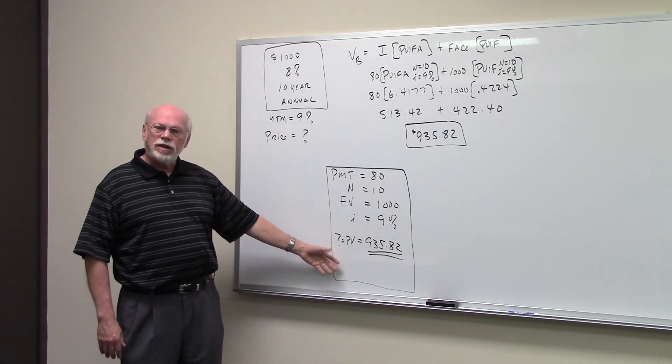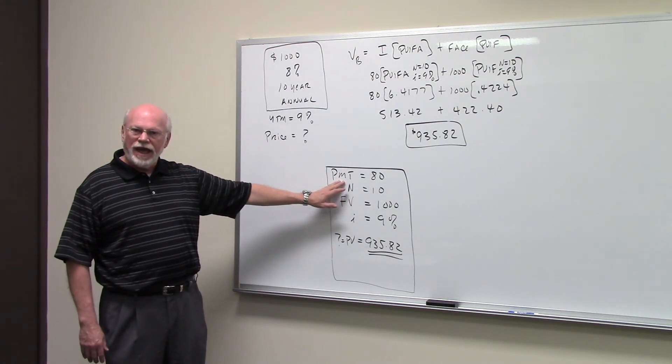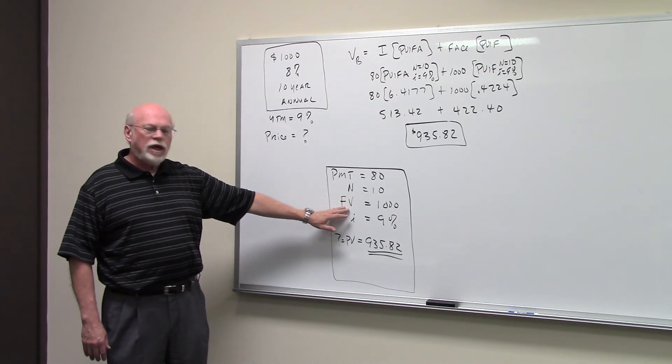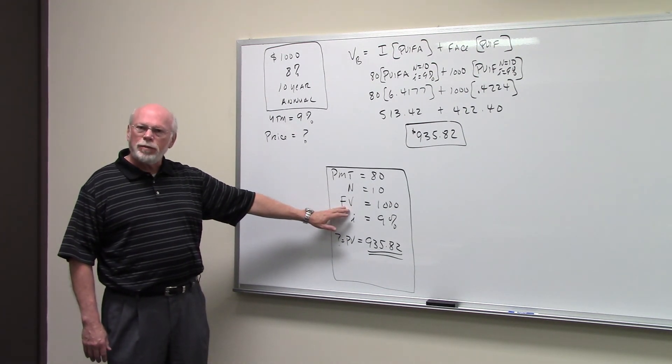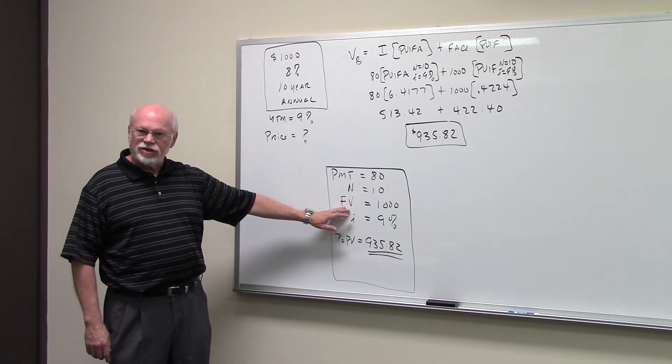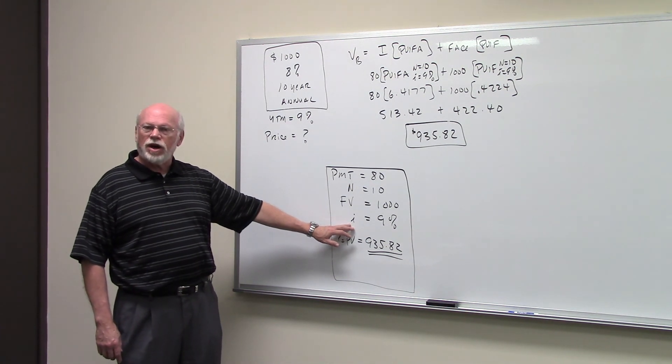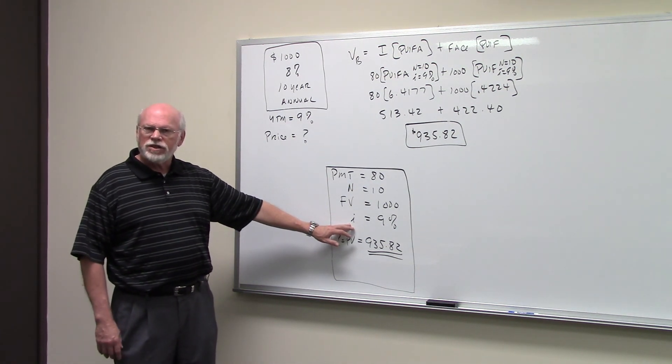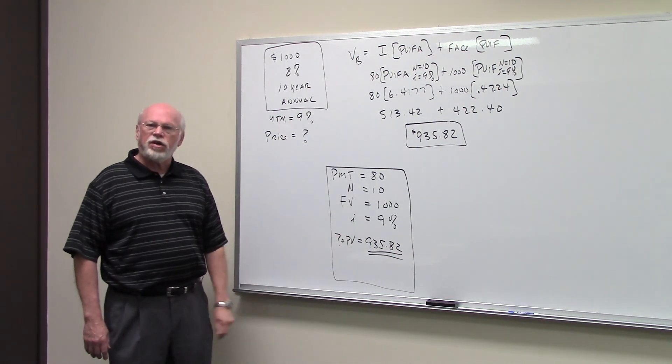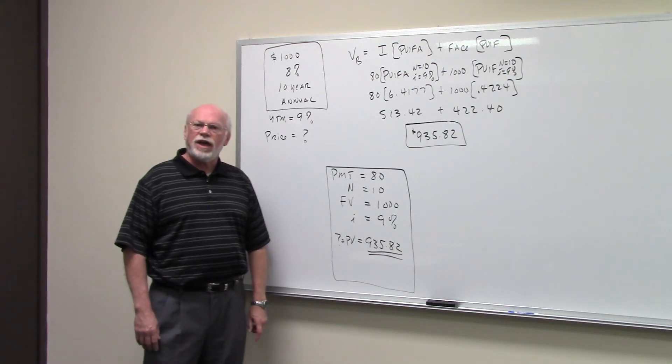To calculate the value of this bond on a calculator, under your payment key you put $80. You set N equal to 10. The future value - that's the lump sum button - is where the face value of the bond is, the $1,000. I is 9, 9%. That's our required return on this bond, our yield to maturity. Calculate the present value of all of this, and again you get $935.82.